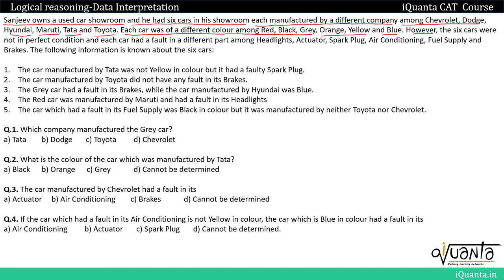However, the 6 cars were not in perfect condition and each car had a fault in a different part among headlights, actuator, spark plug, air conditioning, fuel supply and brakes. The following information is known about the 6 cars. We have been given some clues regarding the cars, their colors and the faults they have in different parts.